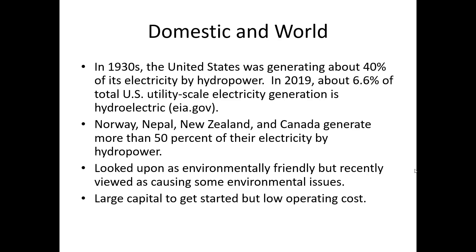Starting in the 1930s, the United States was generating about 40% of its electricity from hydropower. In 2019, that number was about 6.6%. In some other parts of the world, such as Norway, Nepal, New Zealand, and Canada, those countries generate on average more than 50% of their electricity from hydropower.